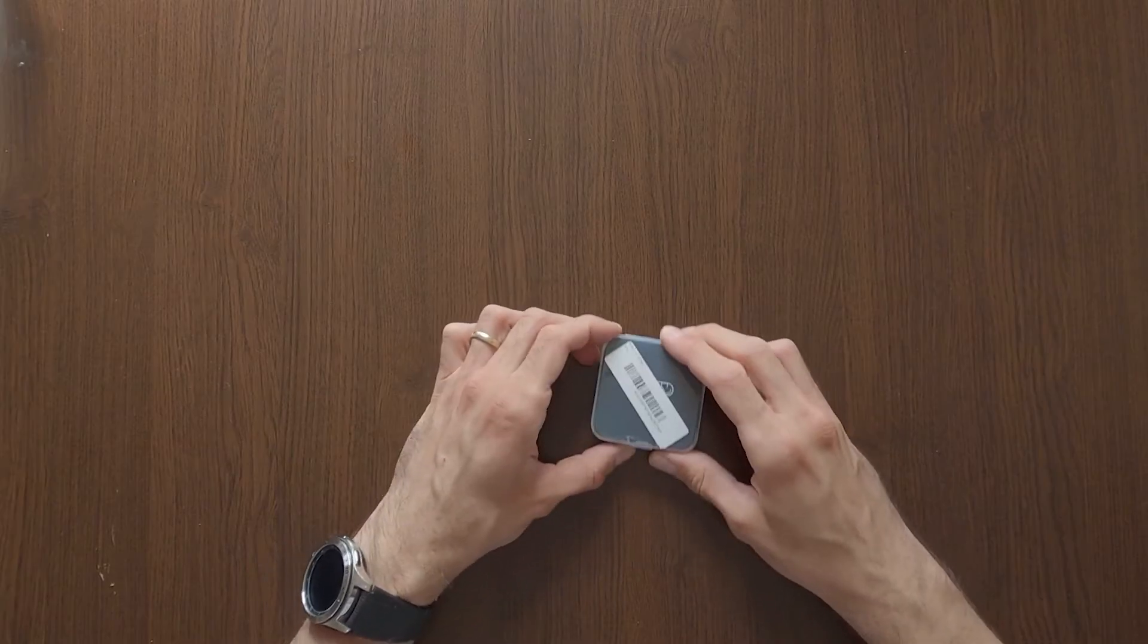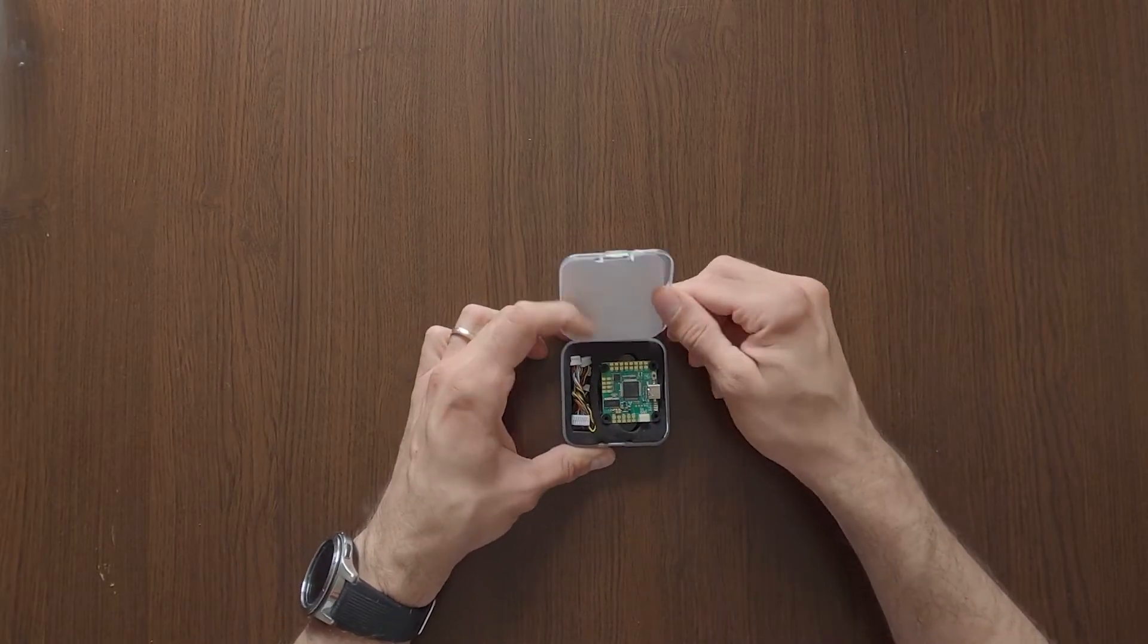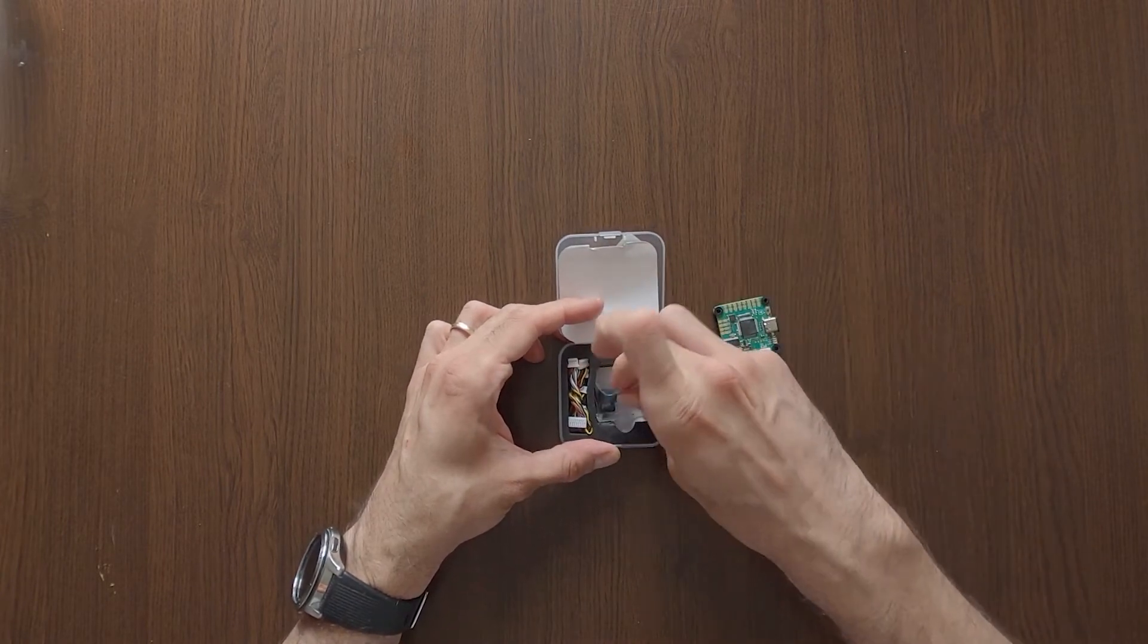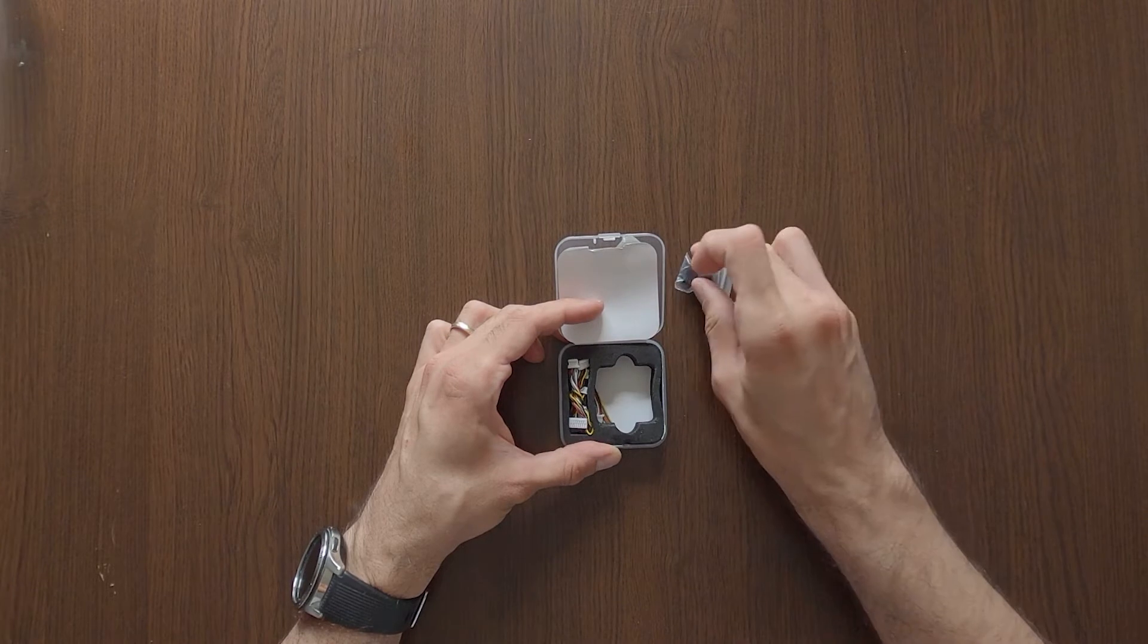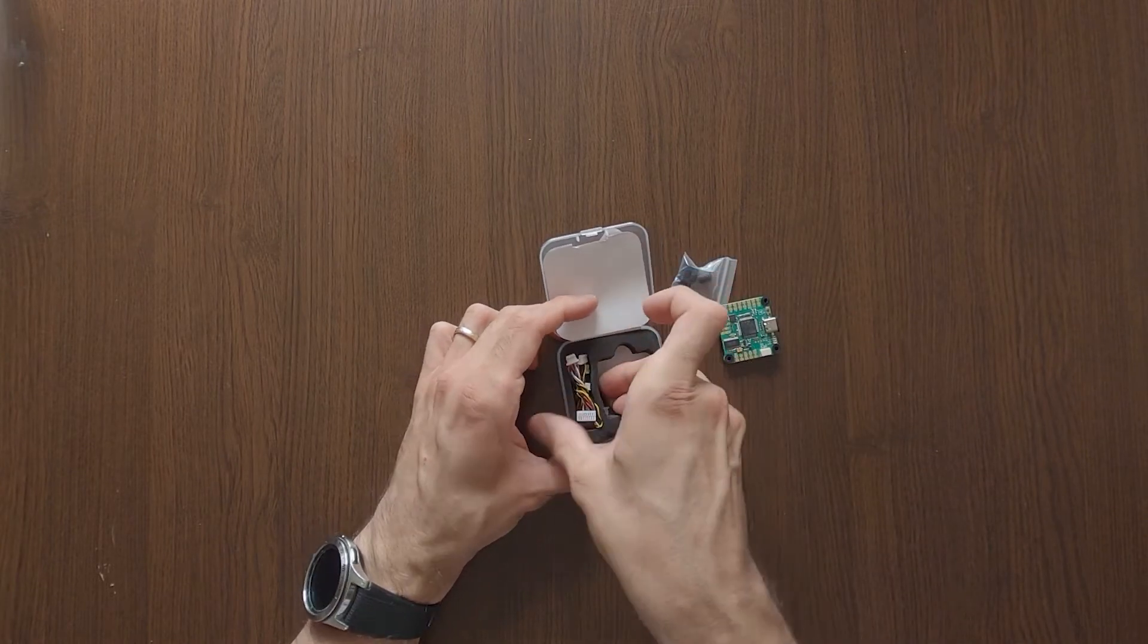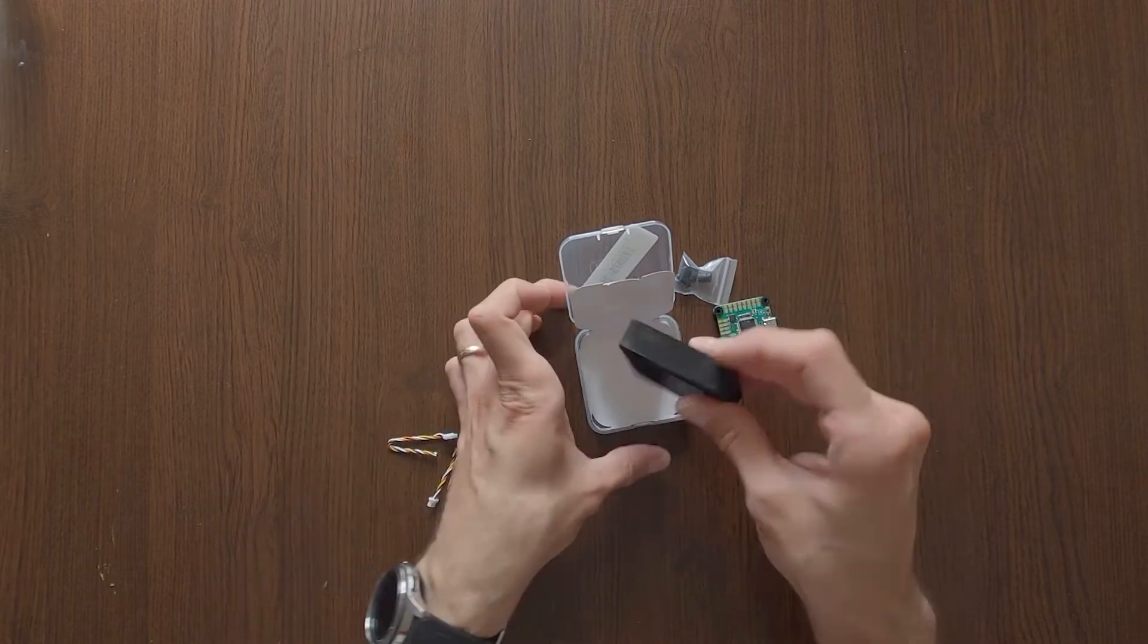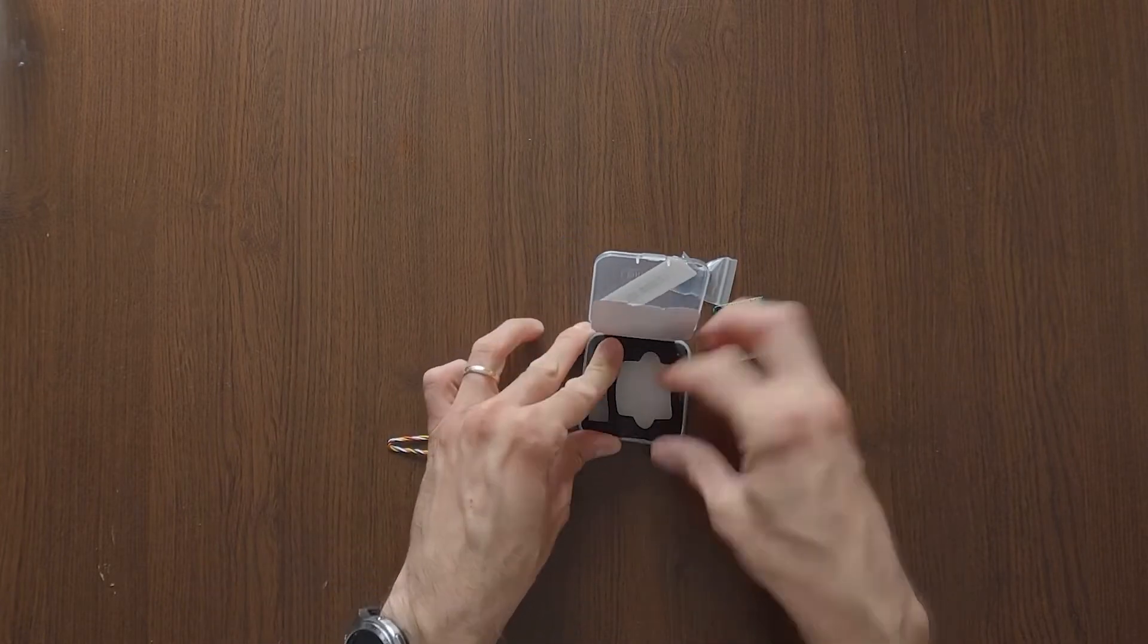It's the newest generation of flight controllers from iFlight and let's see what's inside the box. Inside the box we get the flight controller itself, we have rubber grommets and we have the plethora of cables that I will show you later on.